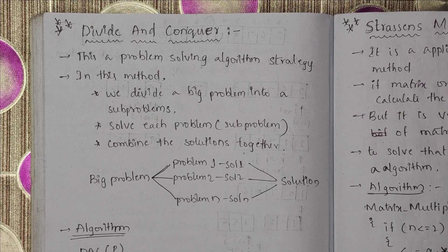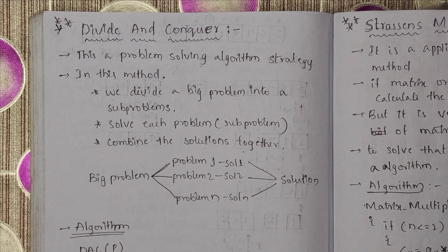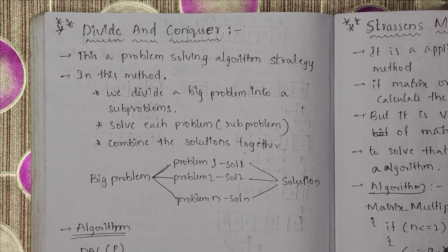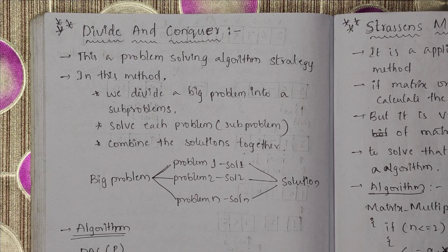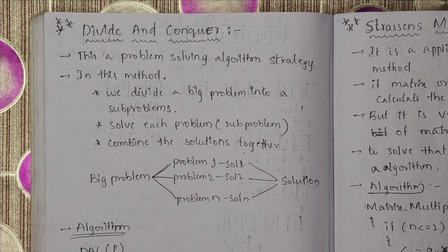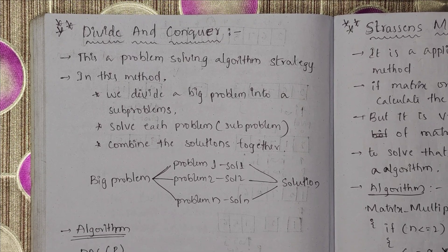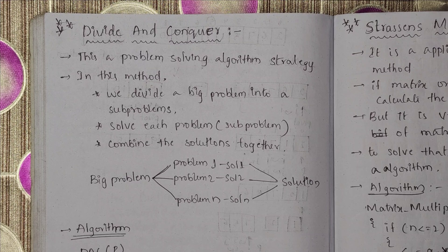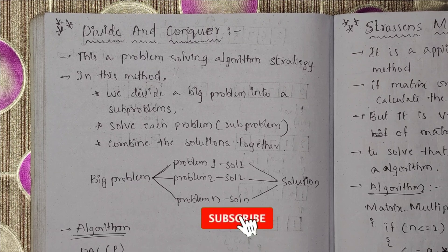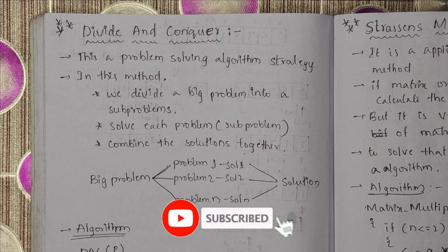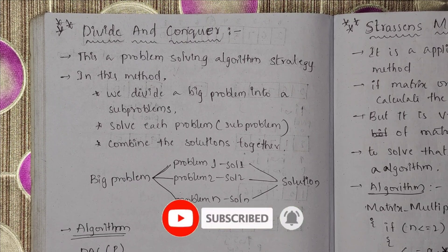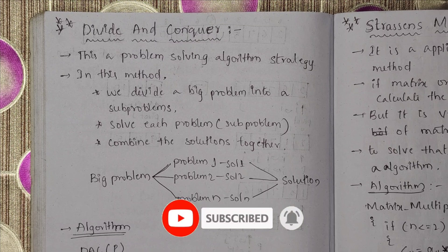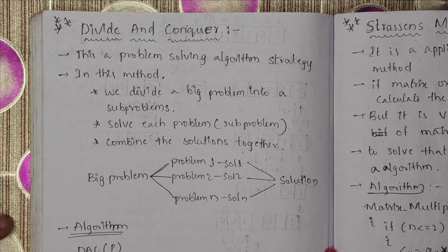Hello guys, welcome to another video of DA Subject entire notes. In the last video I discussed about the first part of the first unit — basics of algorithms, space complexity, time complexity, and asymptotic notations. In this video I am going to cover the divide and conquer method.